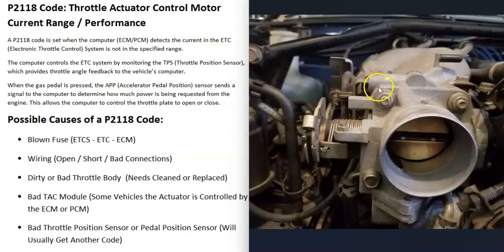When throttle bodies were first introduced, they used a cable that went from the gas pedal up to the throttle body. As the gas pedal was pressed, it would open up that plate and control how much air went into the engine.